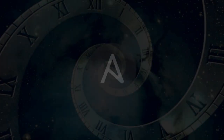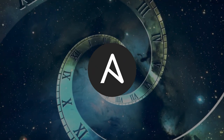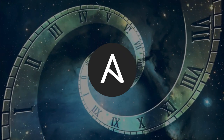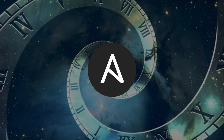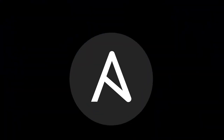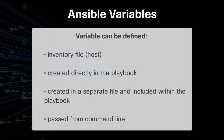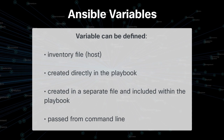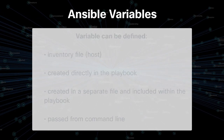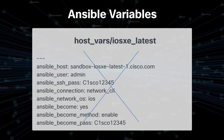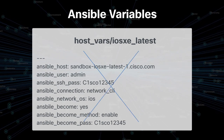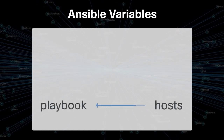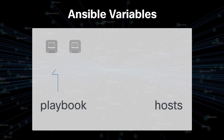For an experienced engineer this might seem like a lot of work for a single ACL, as using Ansible to complete this task will take longer than just configuring the ACL from the CLI. However, this playbook can be reused many times, so it will save you a lot of time in the long run. In Ansible, variables can be defined within an inventory file, created in the playbook, created in a separate file and included within the playbook, or passed from the command line.